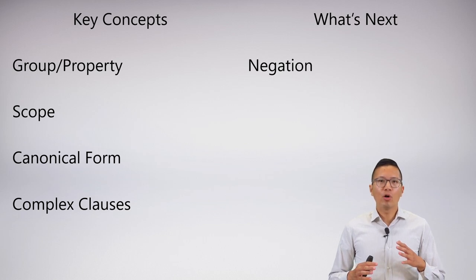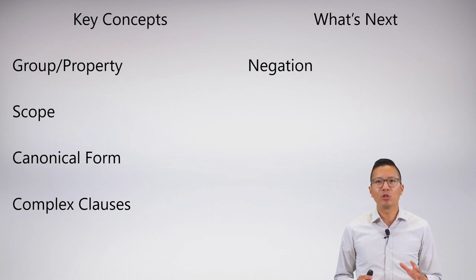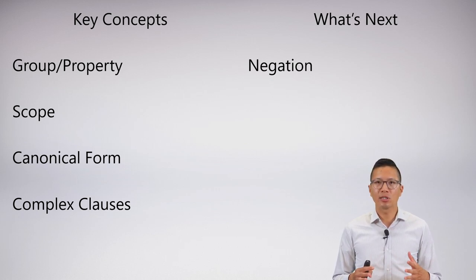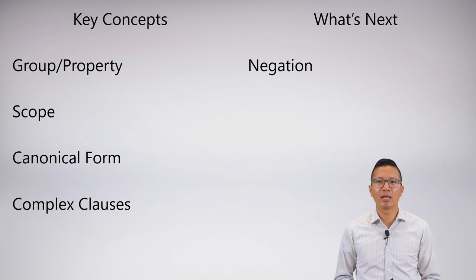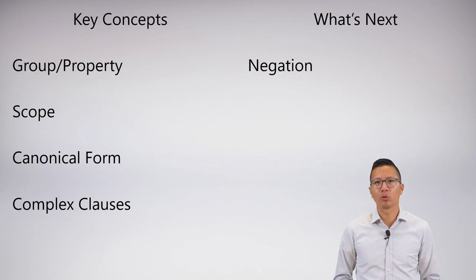We've gone over more of these complex clauses, and we're really able to symbolize a lot of things. But you may have noticed that one thing suspiciously missing is negation — I haven't symbolized anything where I have the negation of a quantifier, and that's what we're going to do next.